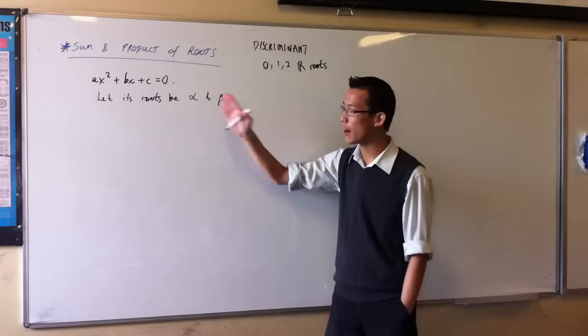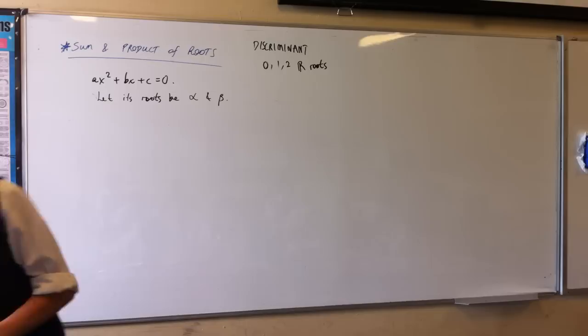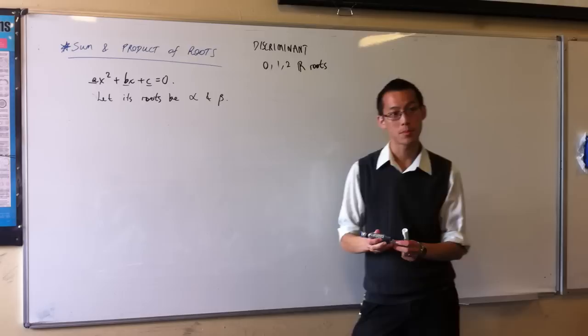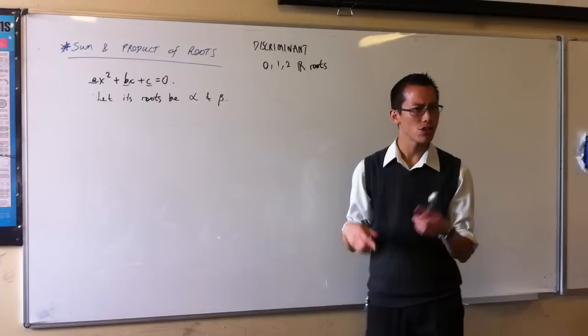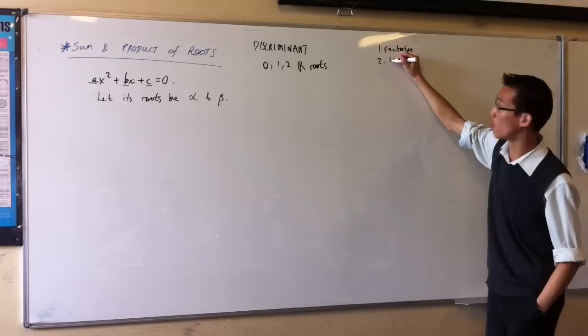Now, how do I get the relationship between the roots and these coefficients here? A, B, and C. Well, if this quadratic has roots of alpha and beta, we know three ways of finding what the roots are. What are the three methods? Number one, you can factorize. Number two, formula. Number three, complete the square. Good.